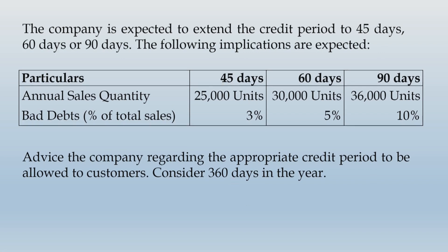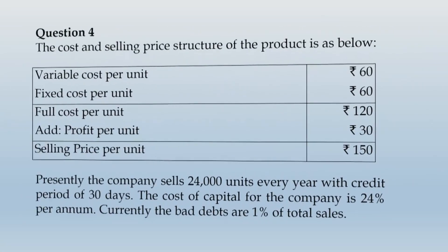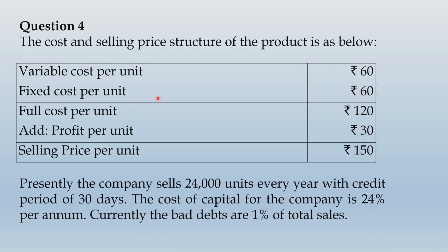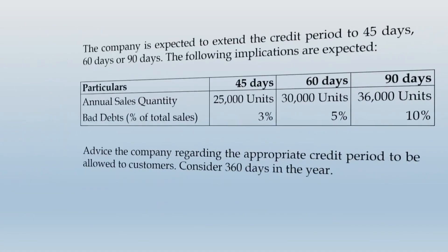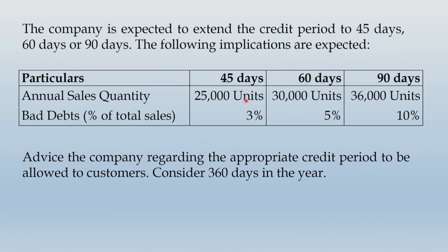The main crux in this question is the fixed cost information. The fixed cost is given per unit, and presently the company is selling 24,000 units — so 24,000 units multiplied by Rs. 60 gives the current amount of fixed cost. With a change in sales volume, the fixed cost will not change. That precaution you must consider. Variable cost will proportionately change — at increased sales of 25,000 units or 30,000 units, variable cost is that quantity multiplied by Rs. 60.